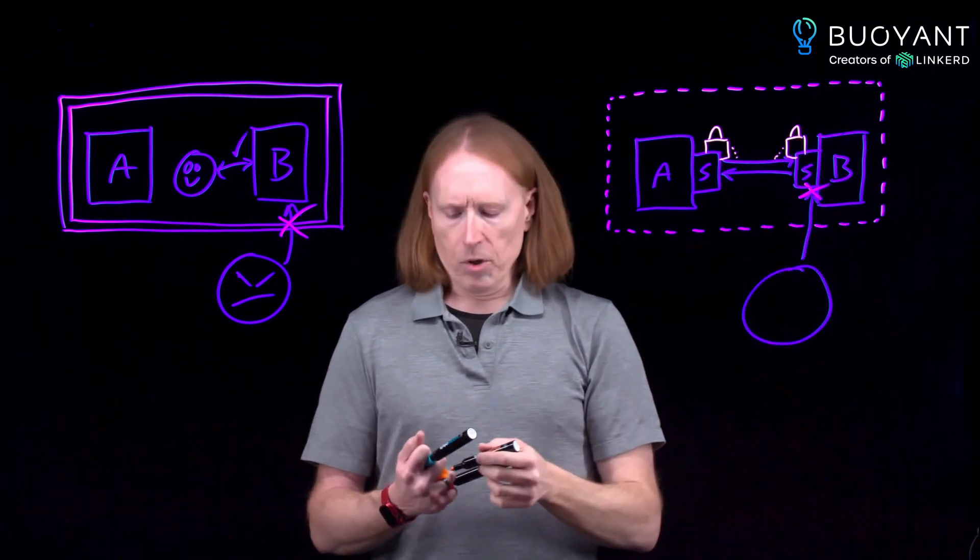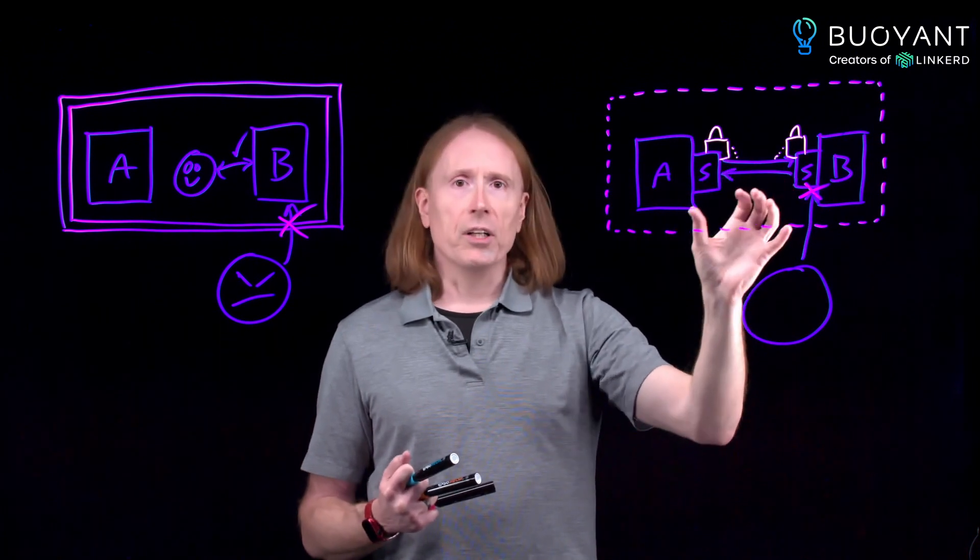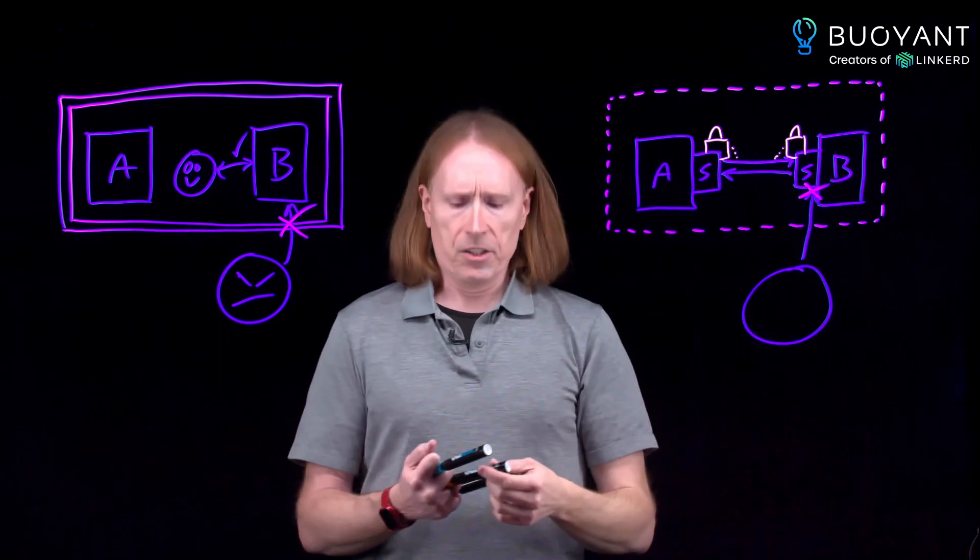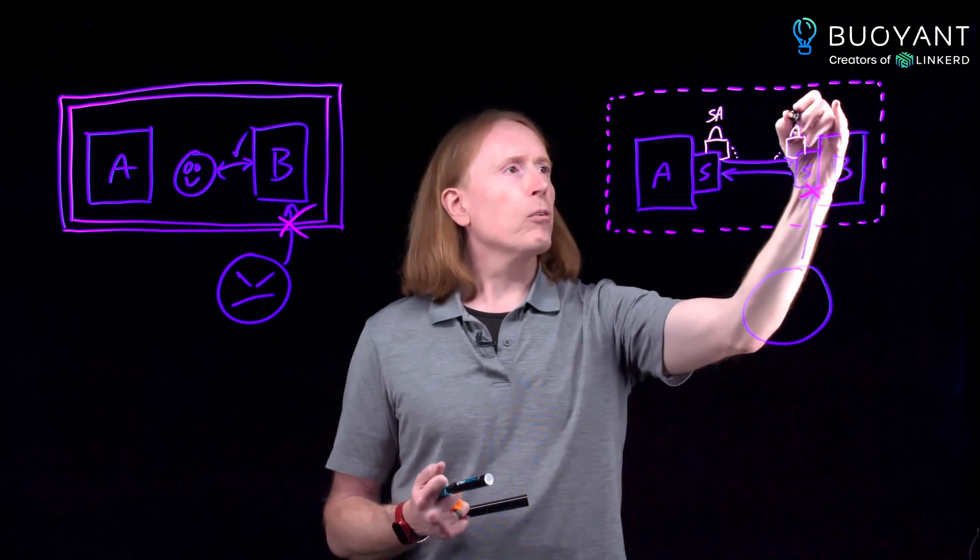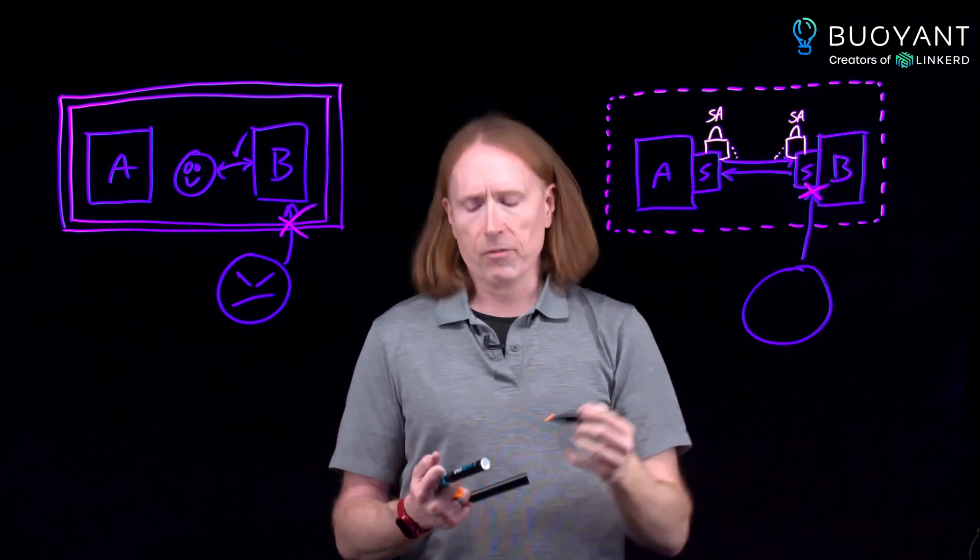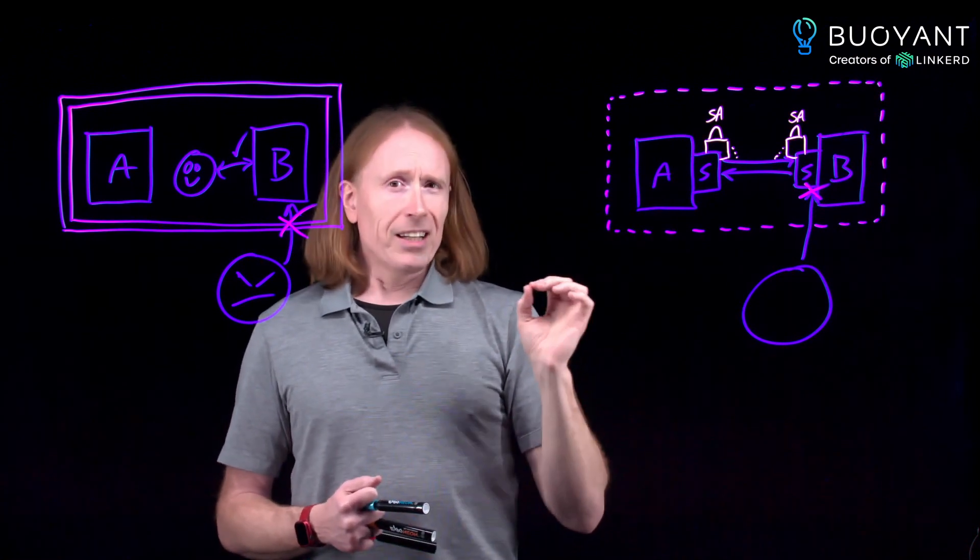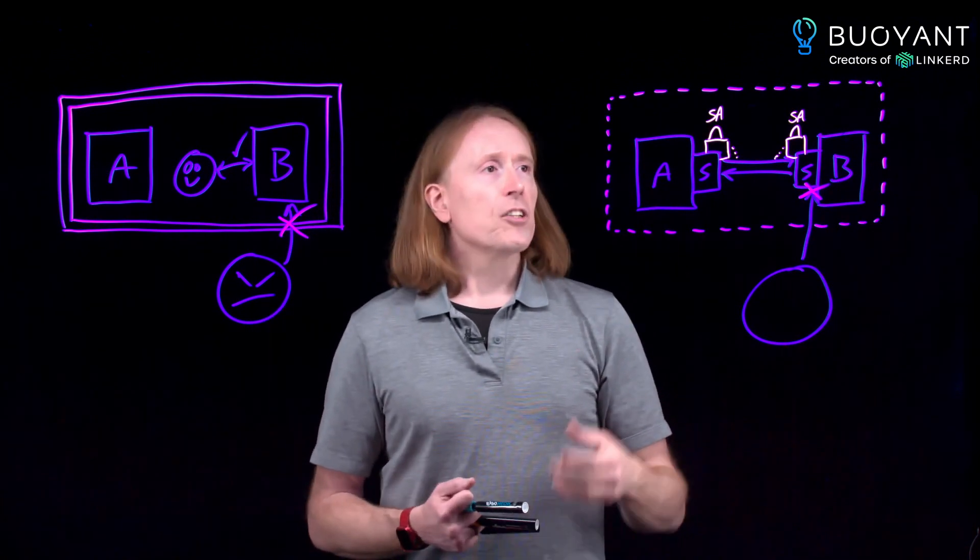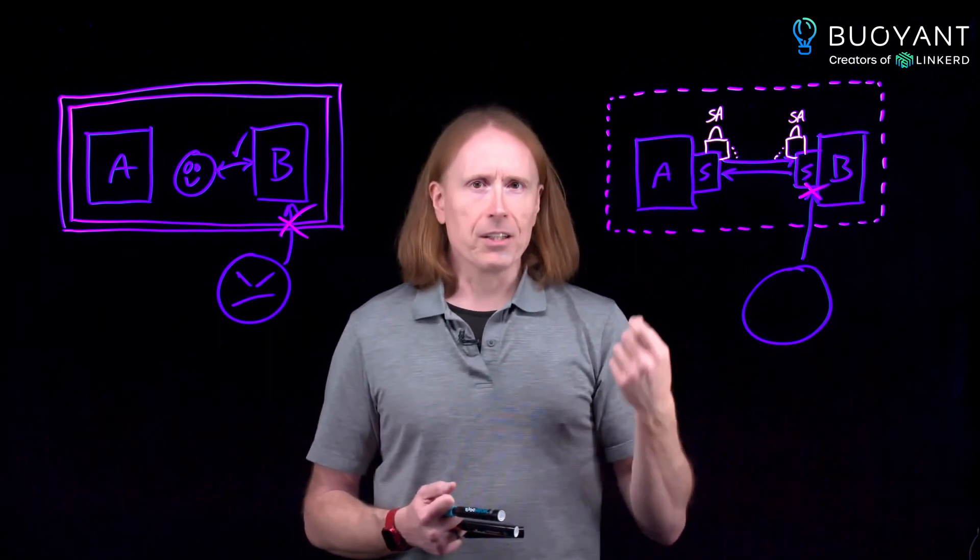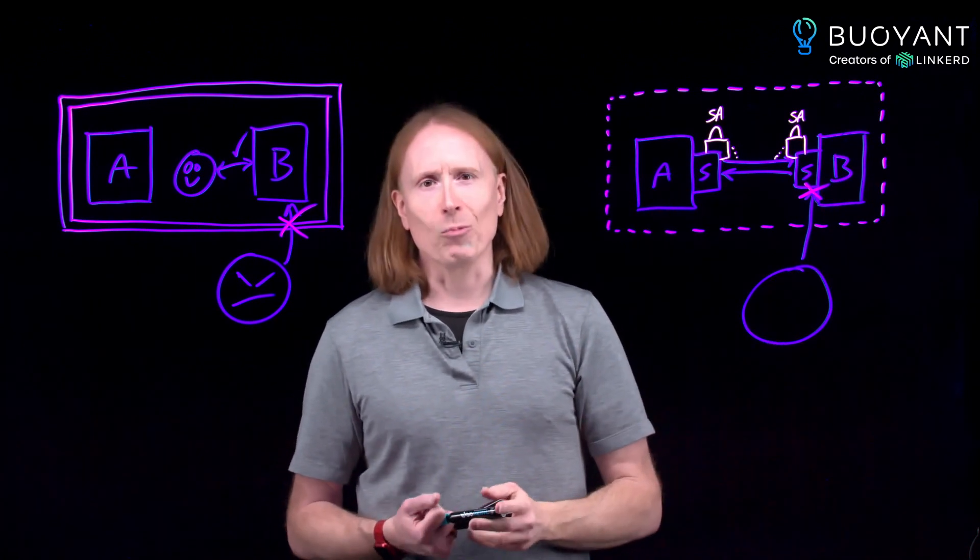That way, both workload A and workload B can know that they are talking to the other one. They get to know the identity of both sides, and these certificates are cryptographically generated from the Kubernetes service accounts associated with the workloads. This gives us cryptographic identity that's intrinsic to the workload, and in no way depends on the network. And it gives us a way that we can check every access, every time, from everywhere, which is the basis of zero trust in Kubernetes.